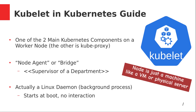Some people call it a bridge because it occupies a very central position between the control plane and the containers. Without kubelet, nothing will work. I like to think of it as a kind of supervisor of a department — instead of human resources, the department contains containers. They do work and they need a supervisor to organize. That is the role of kubelet. Just like a supervisor in real life reports to senior management, in Kubernetes kubelet reports to the API server, the control plane.